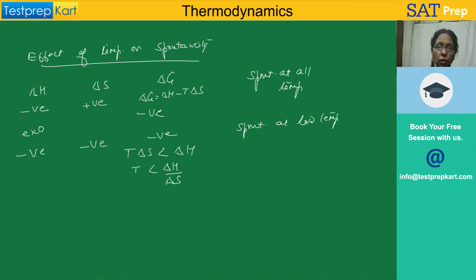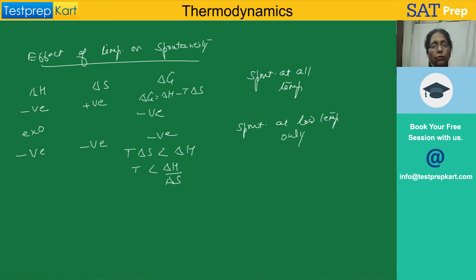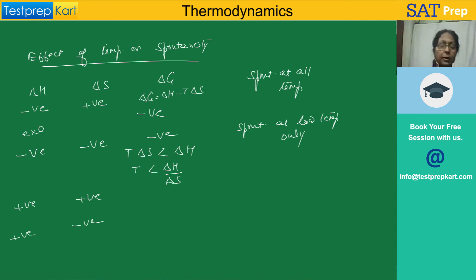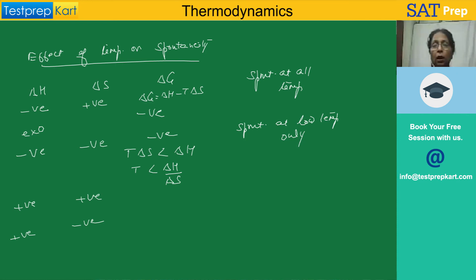For a temperature below that threshold, the T·delta S term will be smaller than delta H, so the reaction is spontaneous. If the reaction is endothermic but entropy favors it, you can similarly find the temperature range. And if delta H is positive and delta S is also negative, the reaction is non-spontaneous at all temperatures. These are the basic concepts of energy and thermodynamics — also called energetics or thermochemistry.